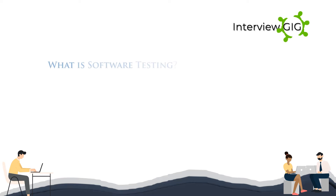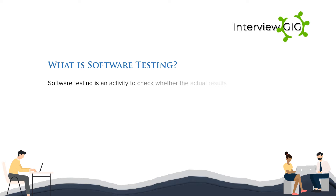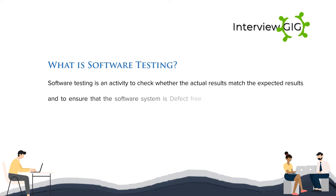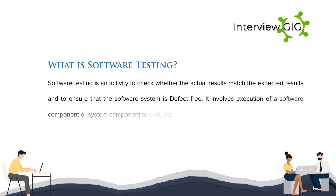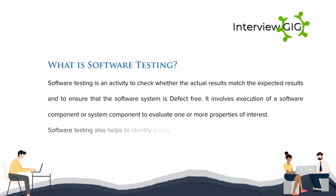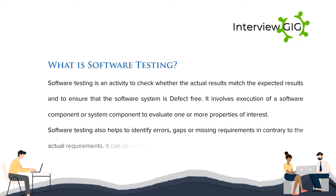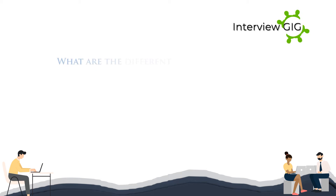What is software testing? Software testing is an activity to check whether the actual results match the expected results and to ensure that the software system is defect free. It involves execution of a software component or system component to evaluate one or more properties of interest. Software testing also helps to identify errors, gaps, or missing requirements contrary to the actual requirements. It can be either done manually or using automated tools.